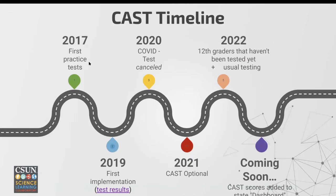As you see on the screen, the CAST began in 2017 and now we're in 2022, having had a year of the test being canceled, the test being optional, and the first implementation results from 2019. This year we are hoping to gain more traction in the scores so that the CAST scores for science can be placed on the dashboard next to math and ELA.